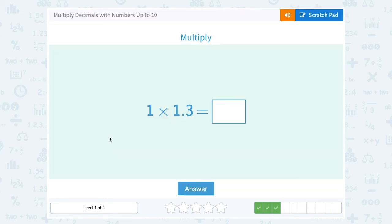1 times 1.3. Well, remember, multiplying by 1 doesn't change our number at all. So 1 times 1.3 must be 1.3.